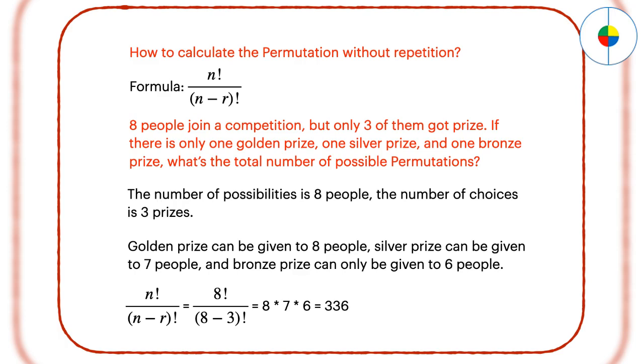To calculate the permutation without repetition, there is a formula, while n is the number of possibilities, and r is the number of choices. For example, 8 people join a competition, but only 3 of them got prize. If there is only 1 golden prize, 1 silver prize, and 1 bronze prize, the permutation will be 336.